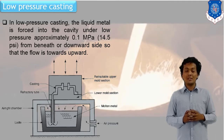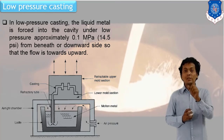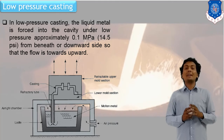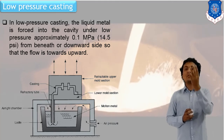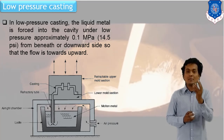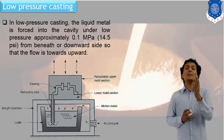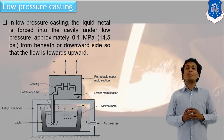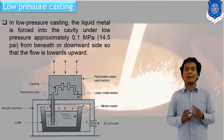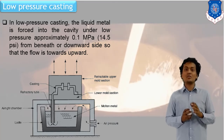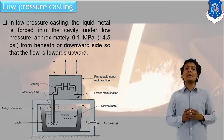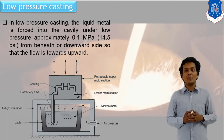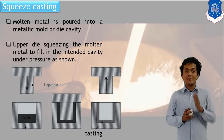Low pressure die casting uses pressure difference. By creating a vacuum and using the difference between vacuum and atmospheric pressure, the liquid metal is forced into a die or cavity. The die is positioned at the upper part, and the liquid metal is driven upward due to this pressure difference. After cooling and solidification, the final component is ready.